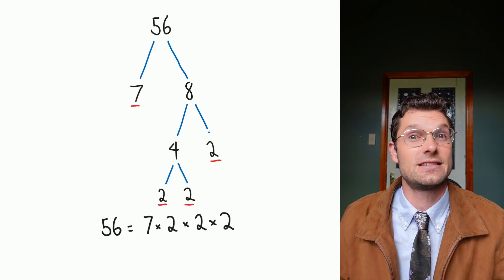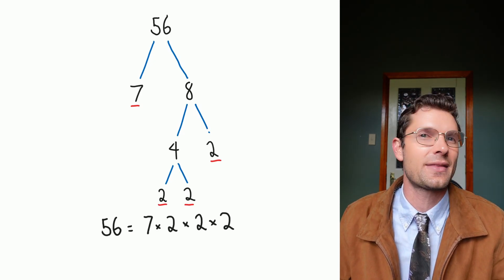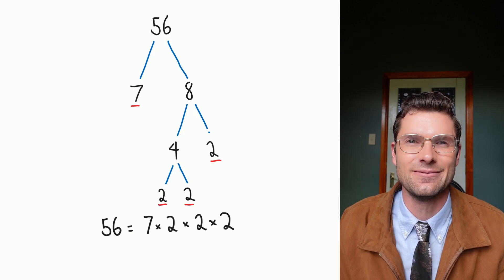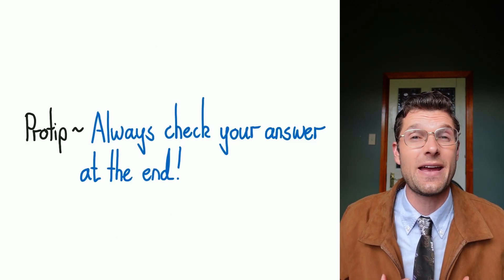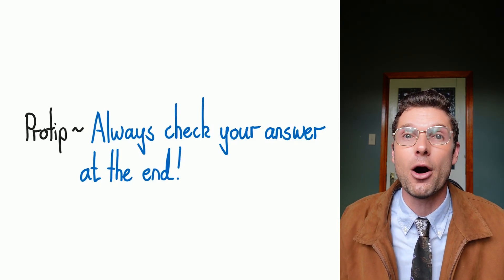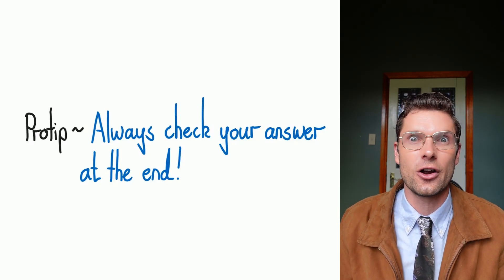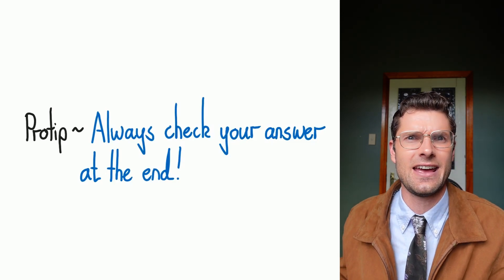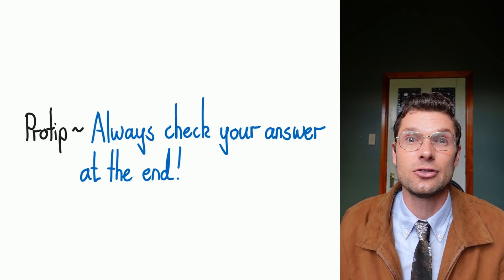56, the prime factors are 7, 2, 2, and 2. Full marks 100%. The big pro tip from me is always check your answer at the very end. Because they are factors, they're all going to multiply to the first number. So all you've got to do is just whack them into your calculator at the end. If it gets to the same number, you definitely got it right.